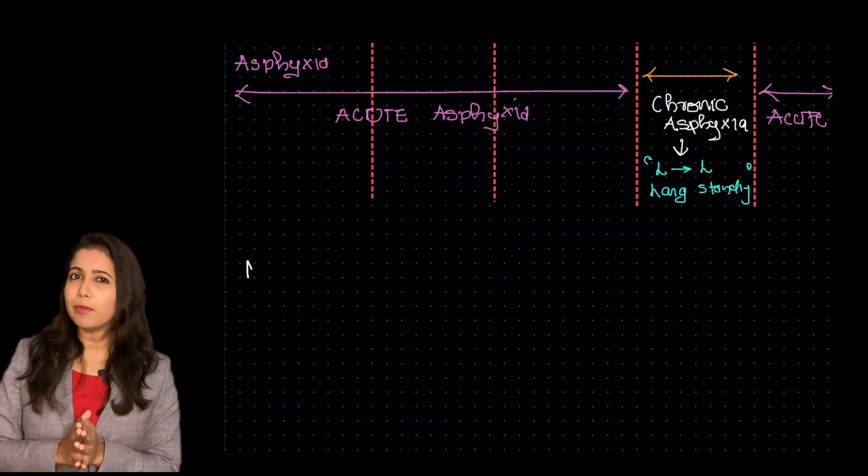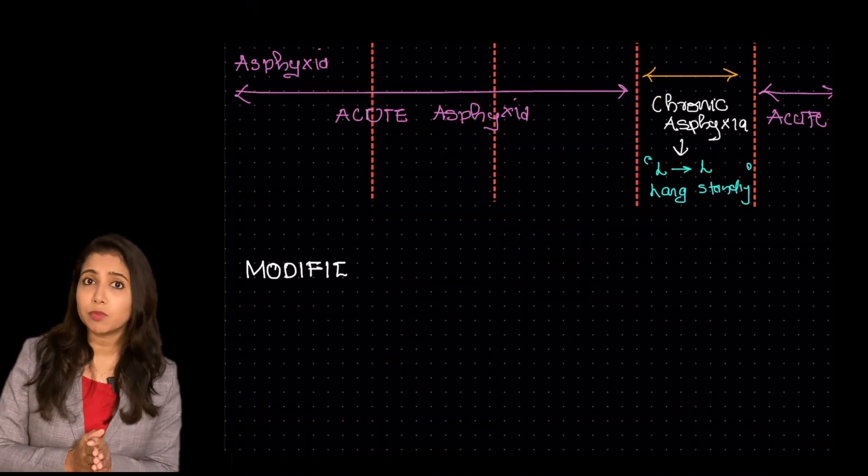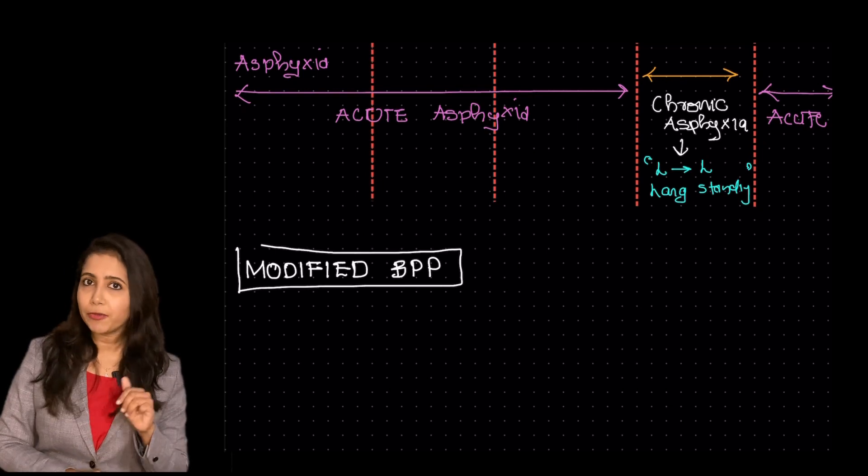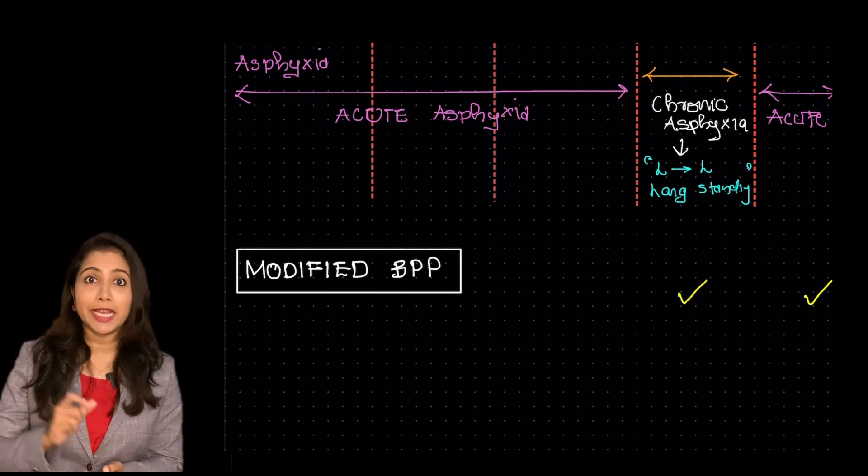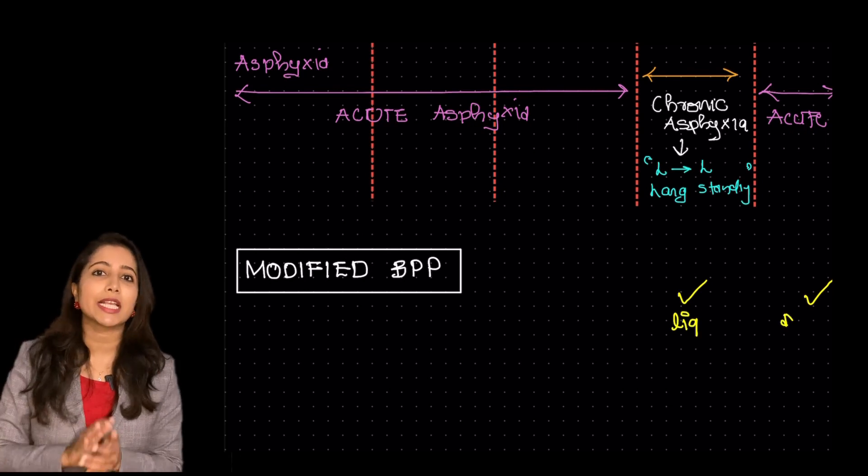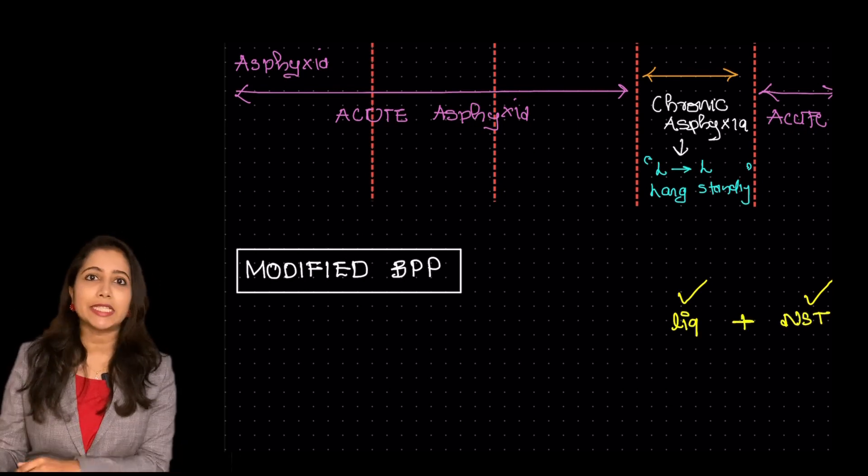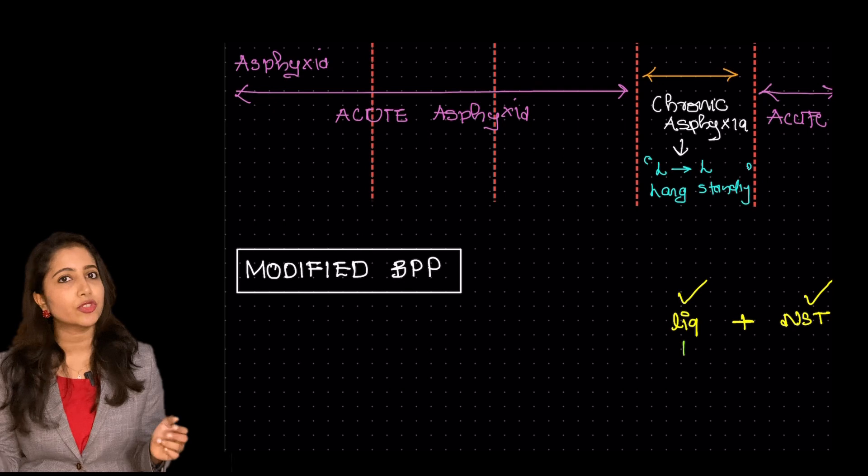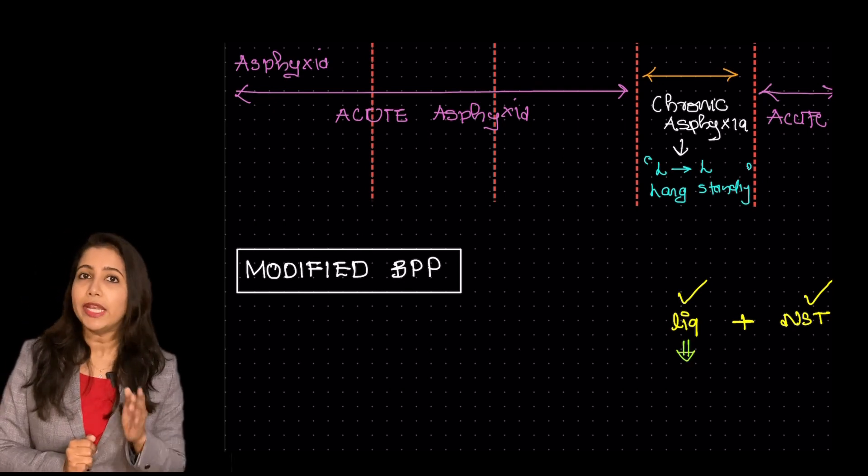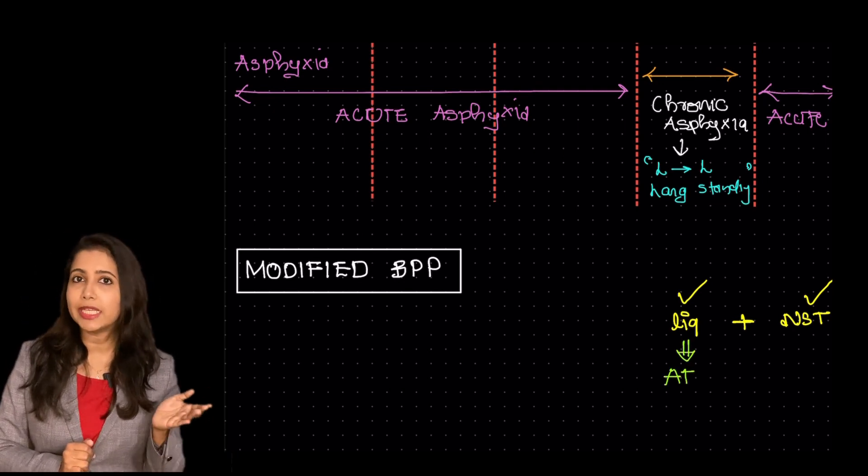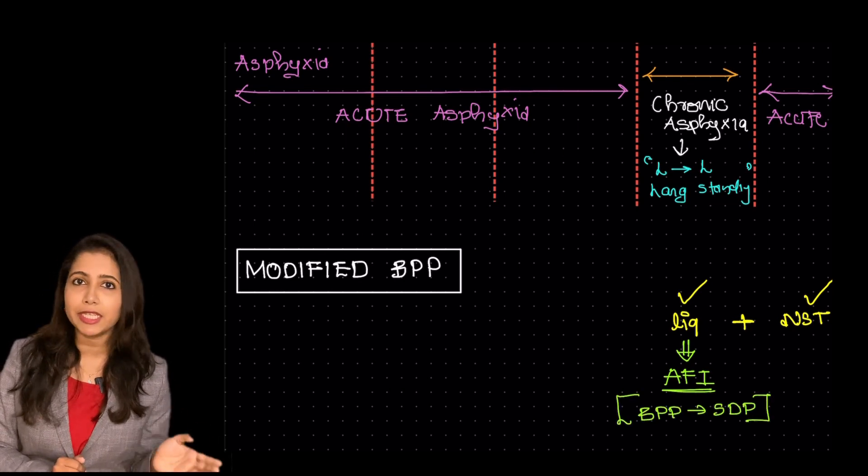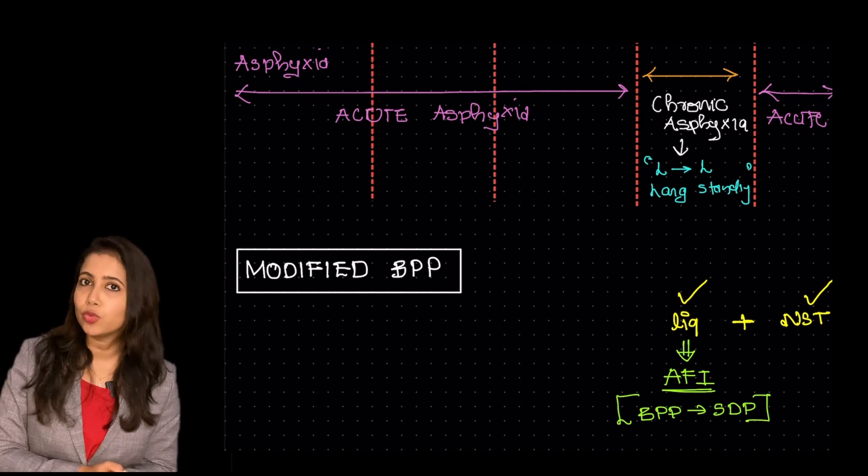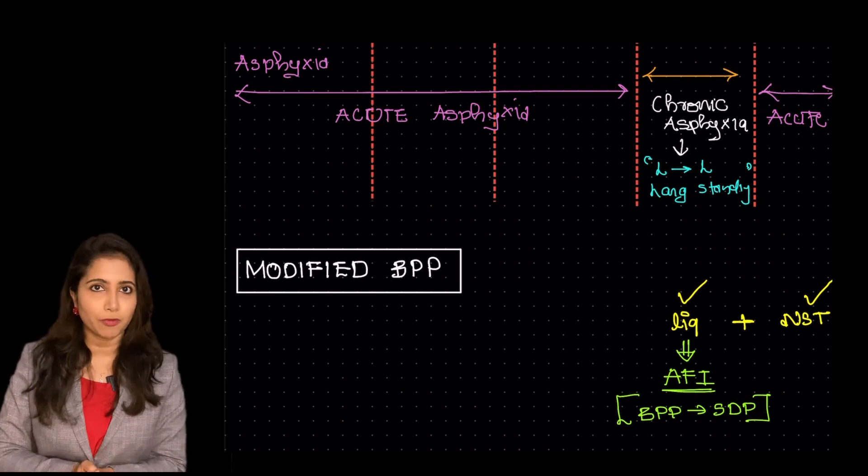Now it is also very important to note regarding what is modified biophysical profile. So modified biophysical profile has just two components. That is the last two one-cinema mnemonics. Liquor, no stress. That is the liquor part and the non-stress part. So liquor is actually measured in this using amniotic fluid index rather than the single deepest pocket which was used in case of biophysical profile.